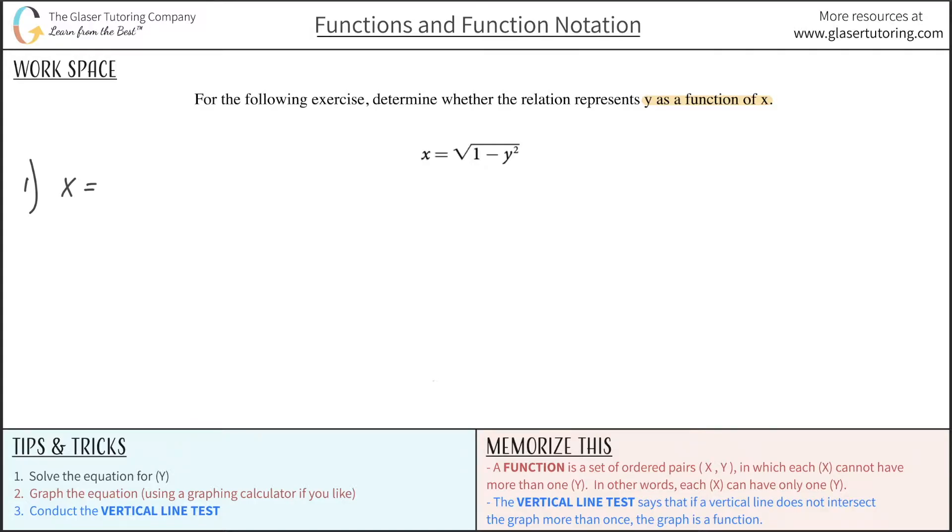So let's just rewrite it. So it's going to be x is equal to square root of 1 minus y squared. The whole goal is to solve for this y. Now, first thing is I got to get rid of the square root. So what we do to both sides is we are going to square them.